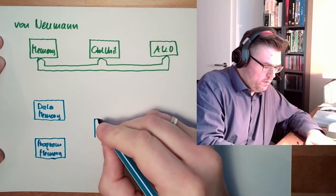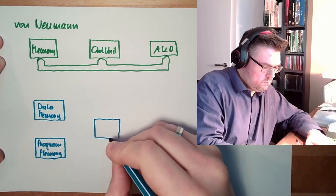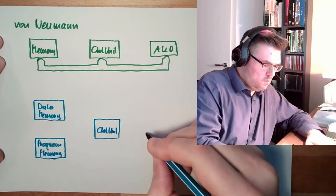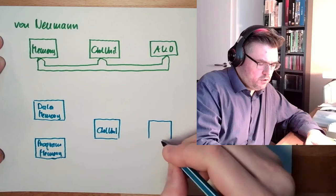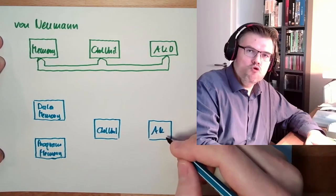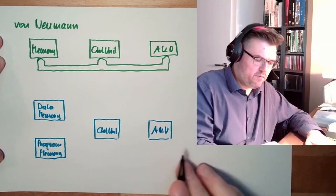There's the control unit and there's the arithmetic logic unit. I always say ALU - arithmetic logic unit.